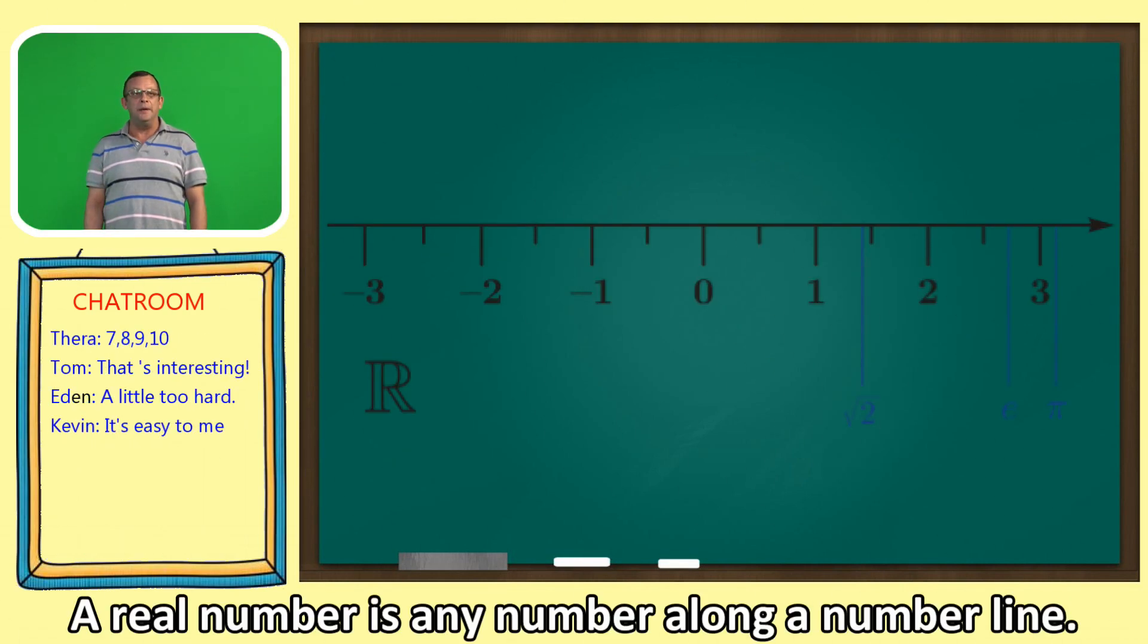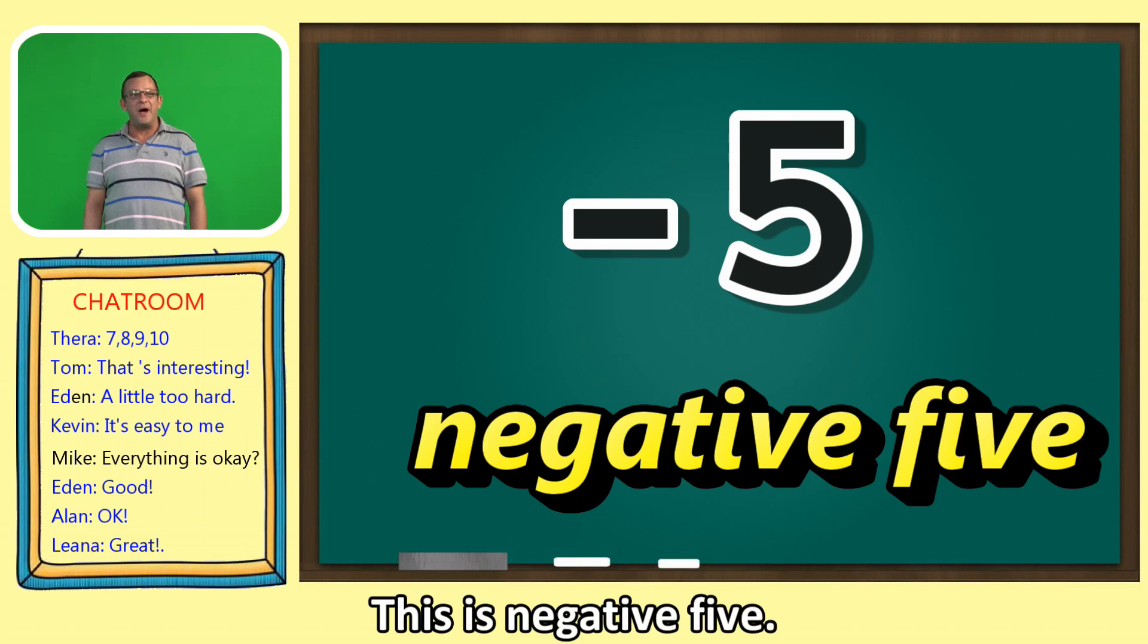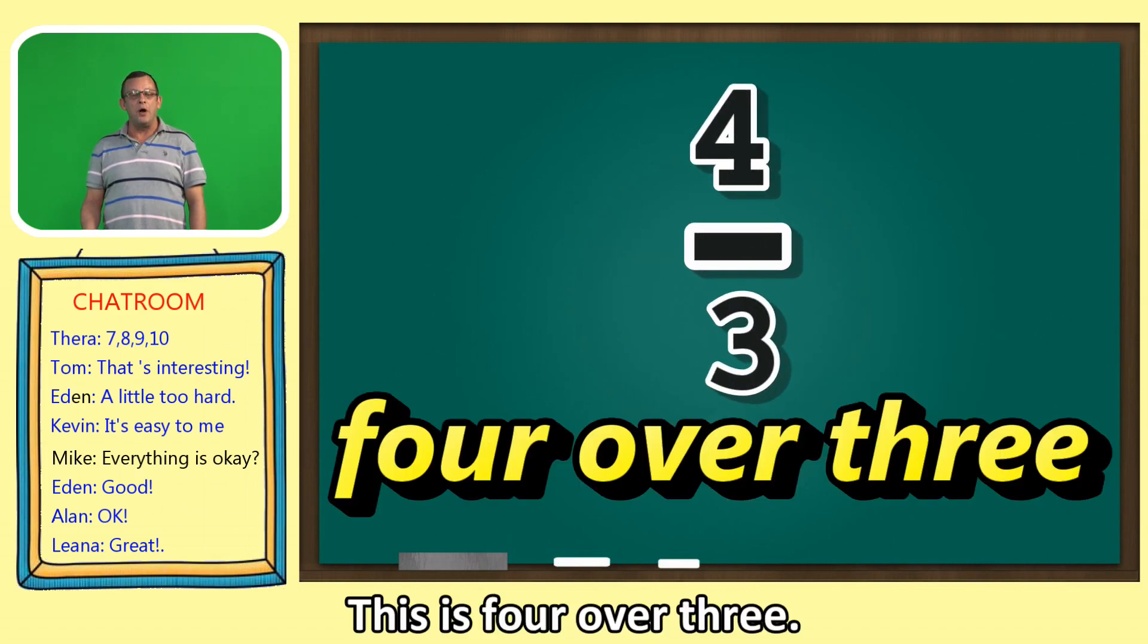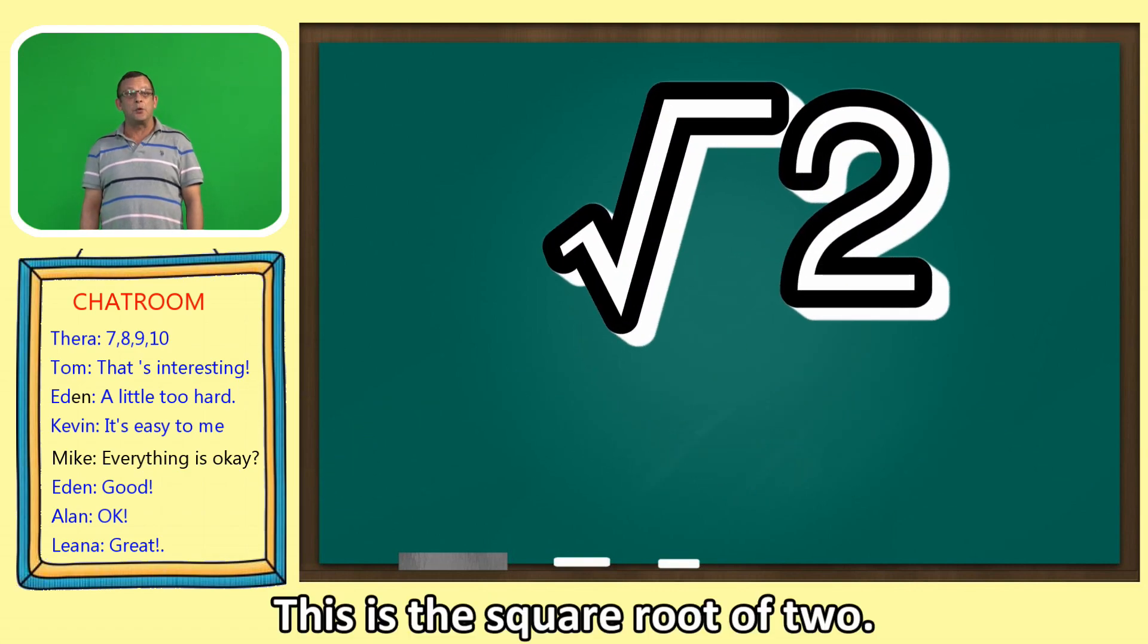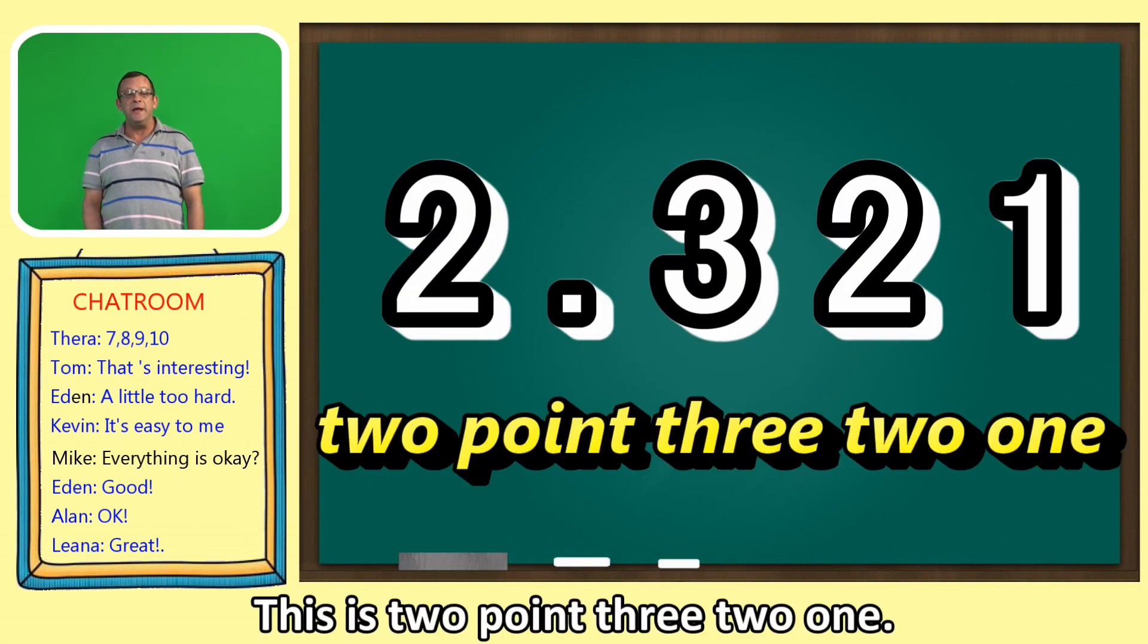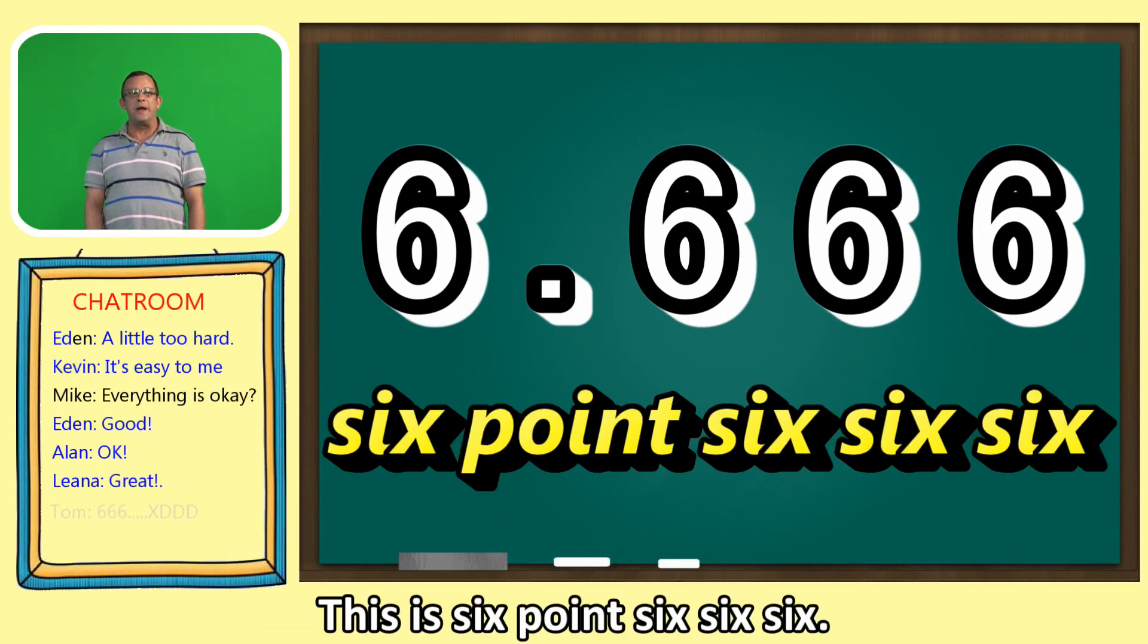A real number is any number along the number line. This is negative 5. This is 4 over 3. This is the square root of 2. This is 2.321. This is 6.666.